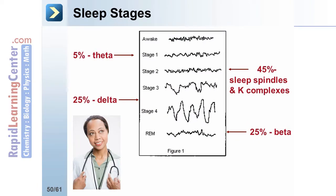Stress is also known to affect sleep. The stages of the total amount of sleep in a young adult per night are as follows. Stage 1 is light sleep for 5% of the time with a theta EEG waveform. Stage 2 is a deeper sleep for 45% of the time with sleep spindles and K-complexes on the EEG. Stages 3 to 4 are also known as slow wave sleep, which is the deepest non-REM sleep, and occurs for 25% of the time with a delta EEG waveform.